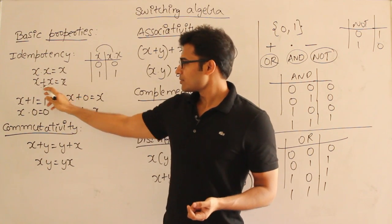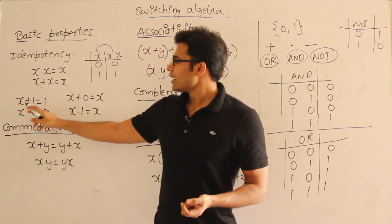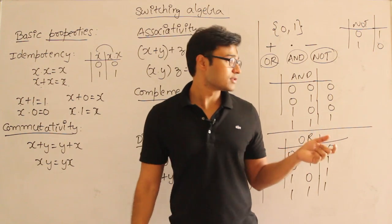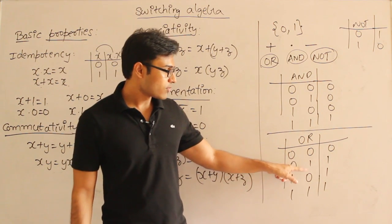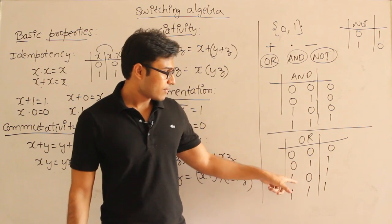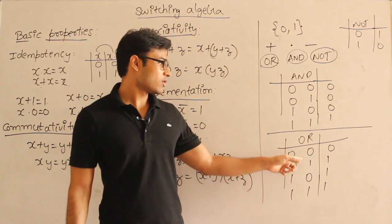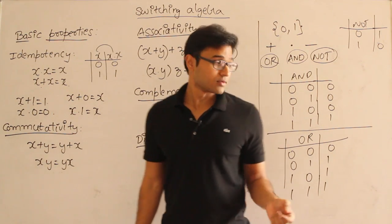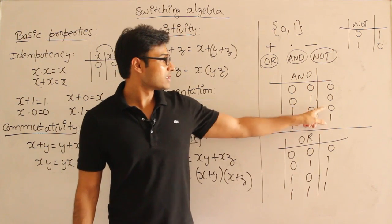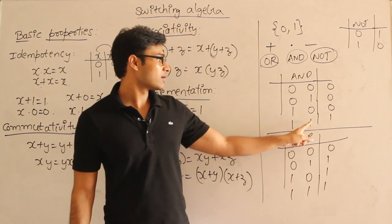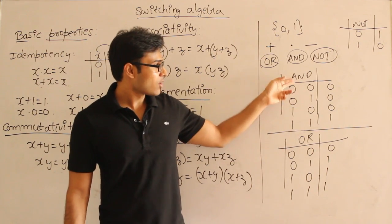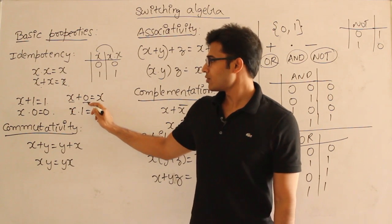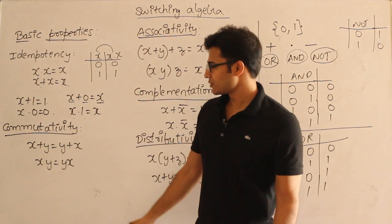Idempotency: x AND x equals x, and x OR x equals x — both verified. x OR 1 equals 1 because whenever you OR anything with 1, the result is 1 irrespective of the other value. And anything when you AND with 0, the result is 0 — unless both values are 1, AND will always produce 0. And anything OR with 0 gives the same thing. These are all trivial.